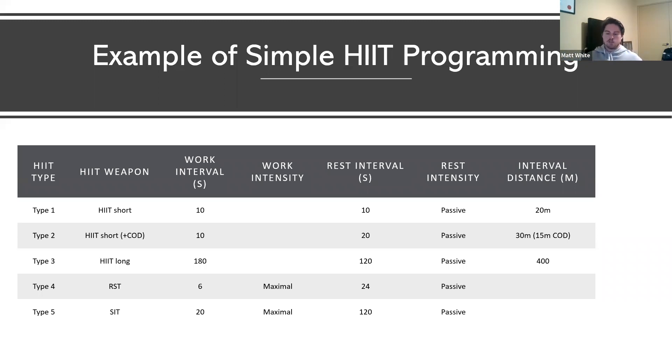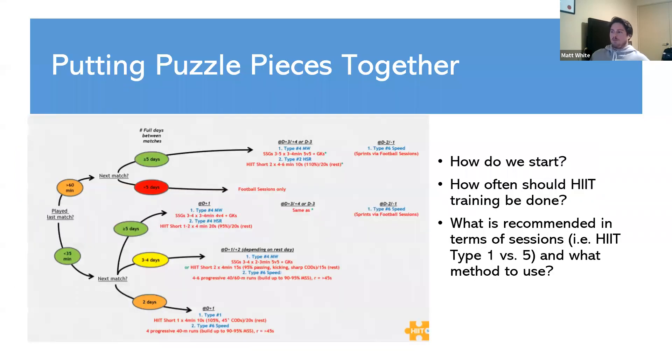And then HIIT type 5, sprint interval, start them on one corner, use the longer boundary line and get them to sprint for 20 seconds flat out, and then 2 minutes rest. So there's just some simple examples for HIIT programming. It's very straightforward and pretty logical when you think about it.